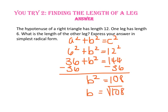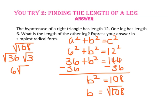Since 108 is not a perfect square, we're going to have to rewrite it in simplest radical form. I know that 36 times 3 equals 108. Since the square root of 36 is 6, we will be left with 6 times the square root of 3 as the length of the other leg.